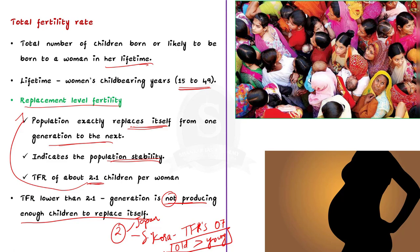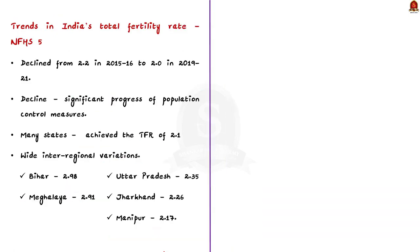India's total fertility rate has declined from 2.2 in 2015-16 to 2.0 in 2019-21. This trend was revealed by the report of the fifth round of the National Family Health Survey, which was released in May 2022. This decline indicates significant progress of population control measures taken by the government.